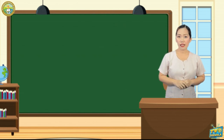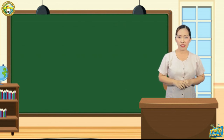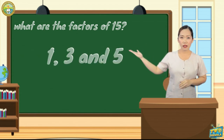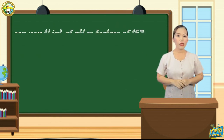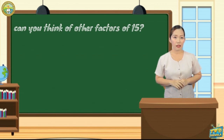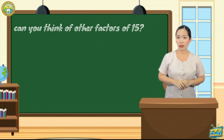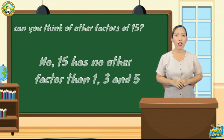In this instance, we can say that 15 has several factors. Based on the examples given, these are 1, 3, and 5. Can you think of other factors of 15? 15 has no other factors than 1, 3, and 5.